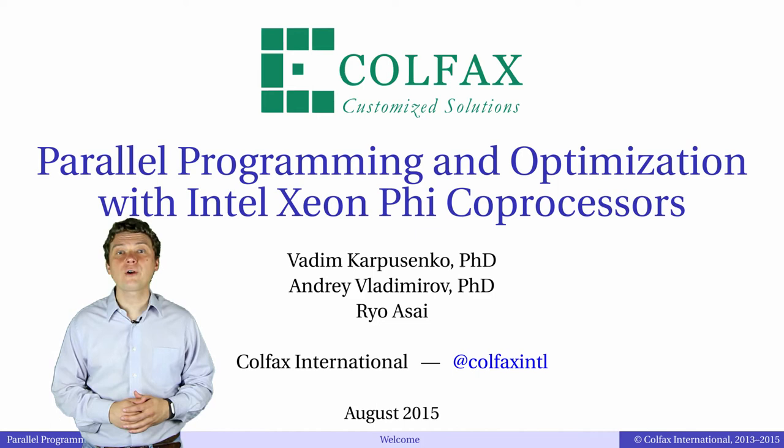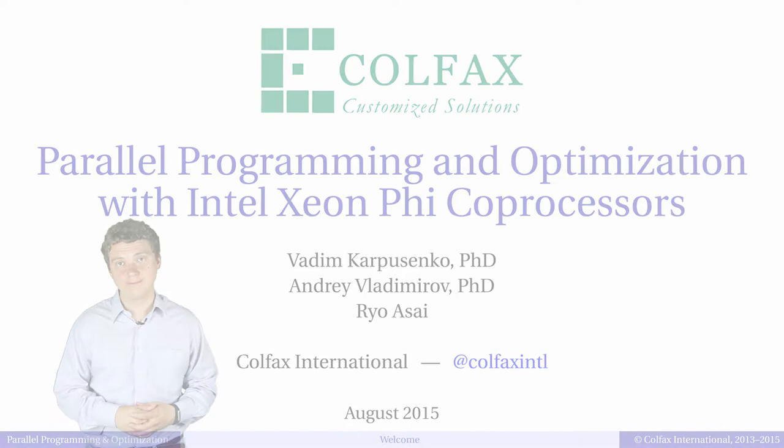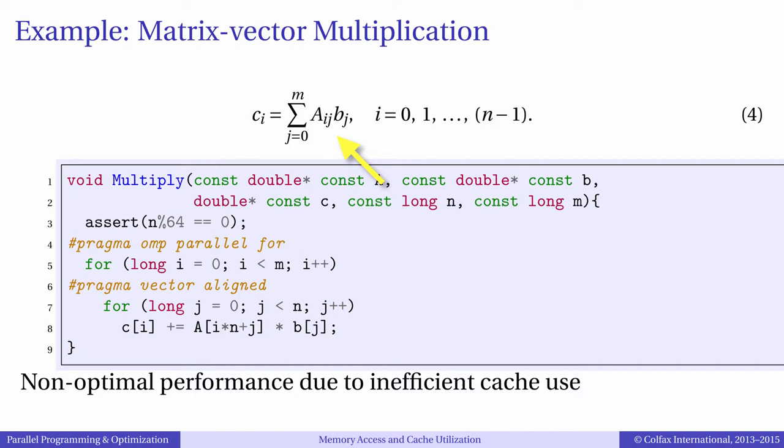In this episode we will illustrate with an example the technique for optimizing memory traffic by improving the temporal locality of data access. The example that we will use is matrix vector multiplication.